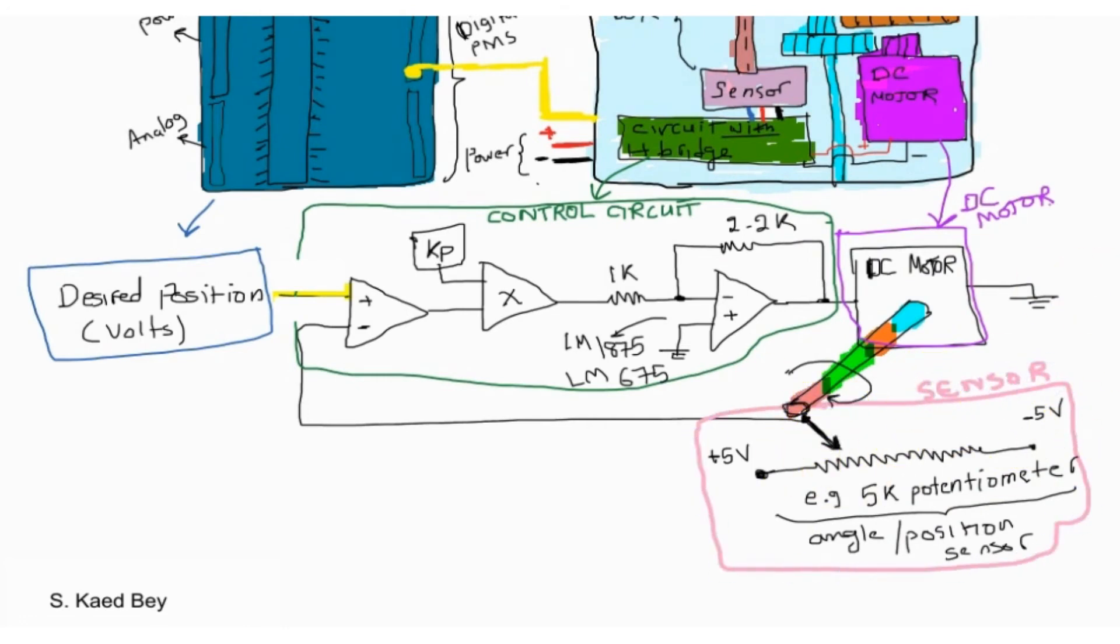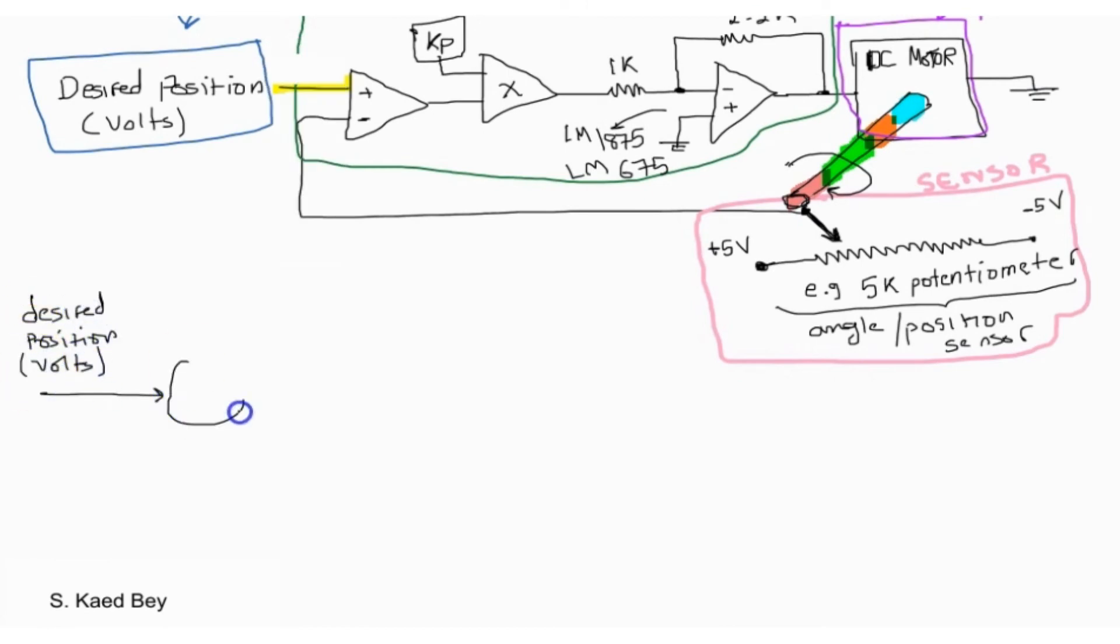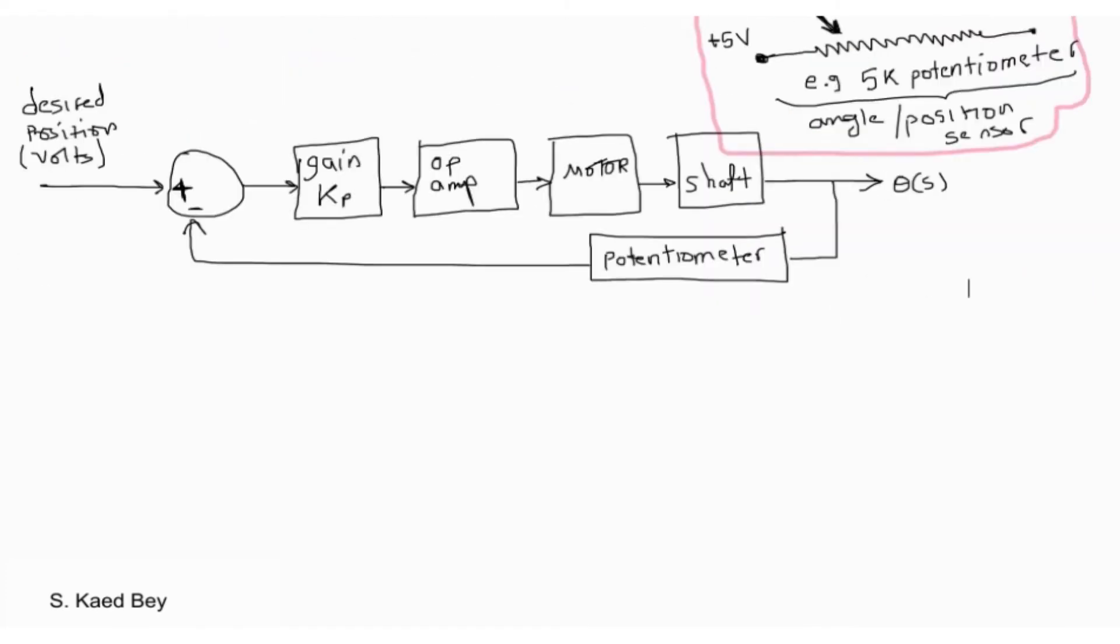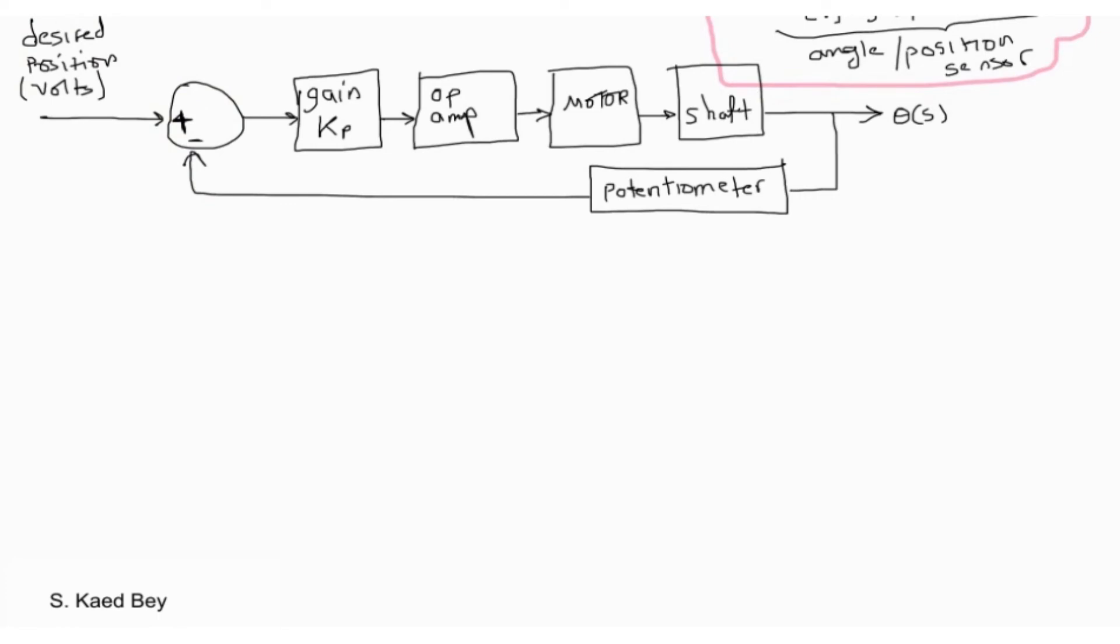The feedback controller of the servo DC motor can be represented with a block diagram as shown here. The proportional gain is the first block we come across. The value of KP can be selected to tune the system performance. For example, KP can be calculated to give the system an overall damping factor of 1 by recognizing the denominator of the transfer function, then extracting the damping factor and the natural frequency. We do expect that the KP is negative in this case, which is true if the op amp is an inverting one which is the case of the LM675.